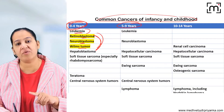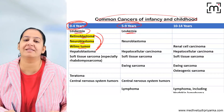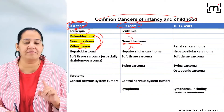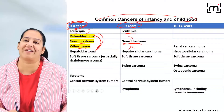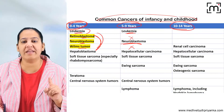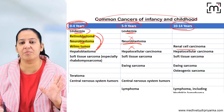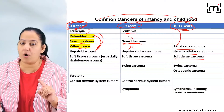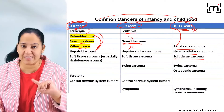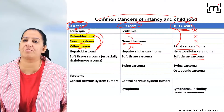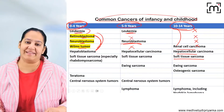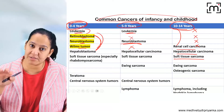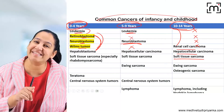In 5 to 9 years, the most common malignancy is still leukemia, and neuroblastoma can also occur. However, retinoblastoma and Wilms tumour do not usually occur after 5 years. From 10 to 14 years, the important tumours are renal cell carcinoma, hepatocellular carcinoma, and soft tissue sarcomas. Neither leukemias nor retinoblastoma, neuroblastoma, or Wilms tumour are common after 10 years.